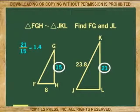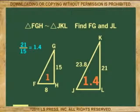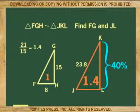We get 1.4. What this tells us is that for every unit of the smaller triangle, there are 1.4 units of the larger triangle. In other words, the sides of triangle JKL are 40% larger than the sides of triangle FGH.